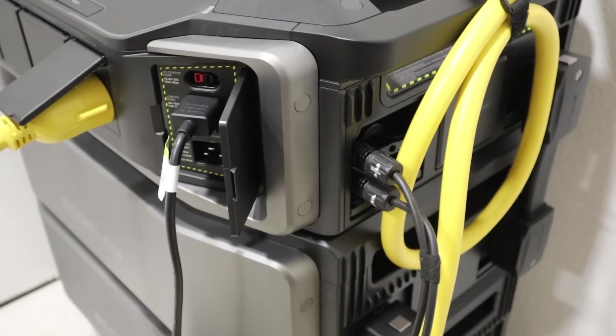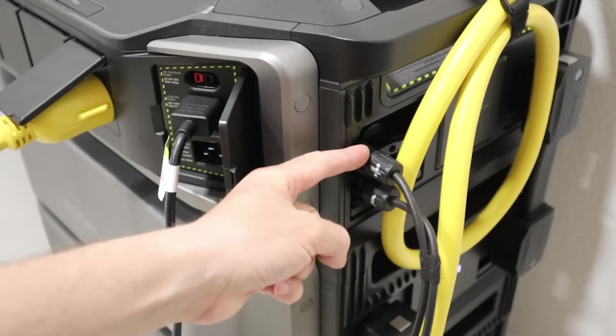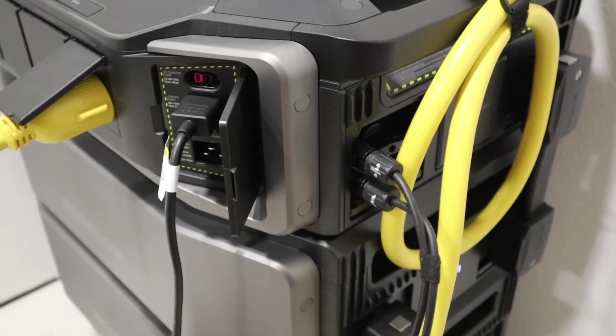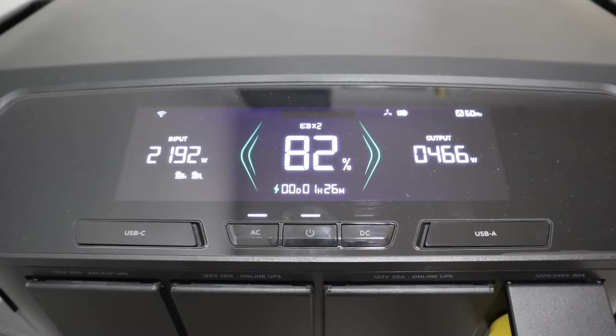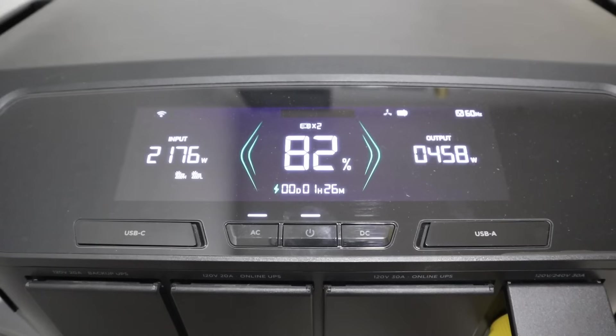One of the biggest advantages of the DPU is the fact that it can take in a ton of solar. You have dual solar charge controllers. This one's good for 4,000 watts. This one's good for 1,600 watts, for 5,600 watts total. One thing that stands out about the DPU is how quiet it is. You can see that the fan is currently running, and I can be in the same room recording a video without even hearing the fan. That is really cool.